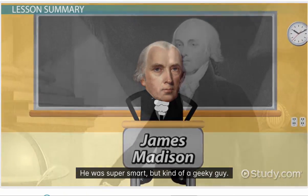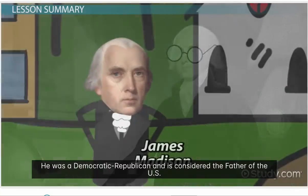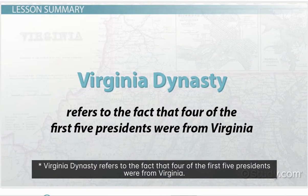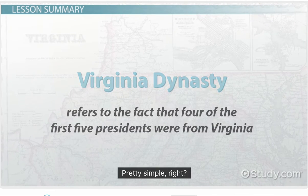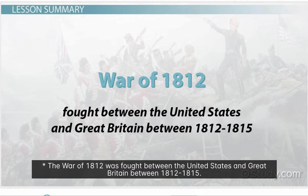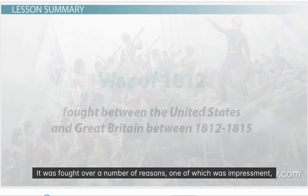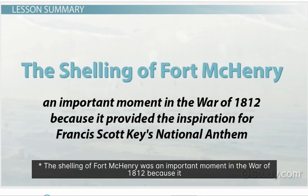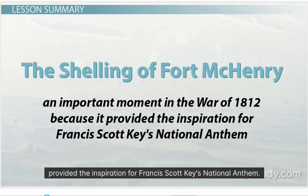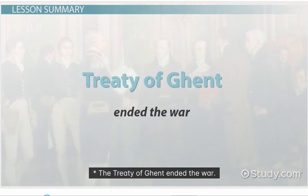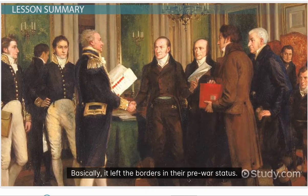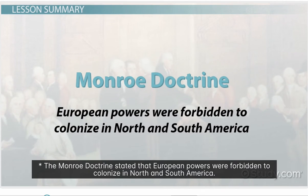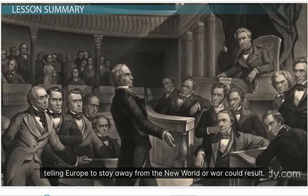So we're good to go on James Madison — he was super smart but kind of a geeky guy. He was our fourth president, a Democratic-Republican, and is considered the father of the U.S. Constitution. Virginia Dynasty refers to the fact that four of the first five presidents were from Virginia. The War of 1812 was fought between the United States and Great Britain between 1812 and 1815, over reasons including impressment — the stealing of foreign sailors and forcing them to fight for another state. The shelling of Fort McHenry inspired Francis Scott Key's National Anthem. The Treaty of Ghent ended the war, leaving borders in their pre-war status — the war is generally considered a draw. The Monroe Doctrine stated that European powers were forbidden to colonize in North and South America, telling Europe to stay away from the New World or war could result.